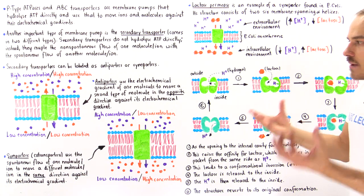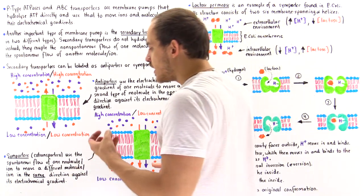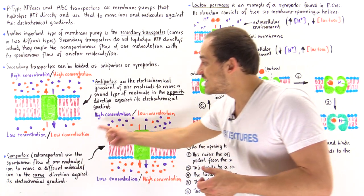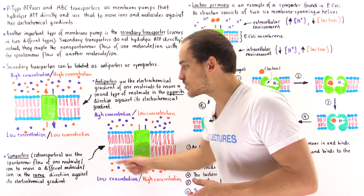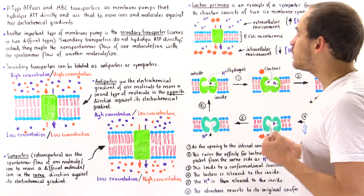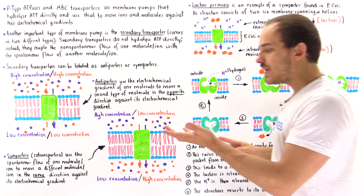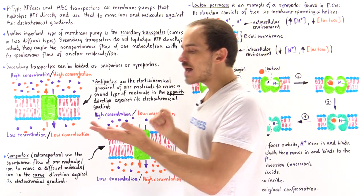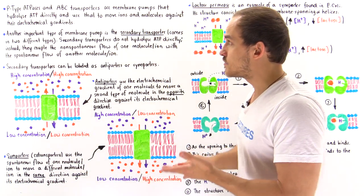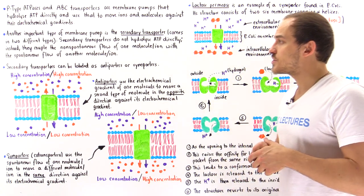To demonstrate a specific example, let's look at a very common type of symporter found in E. coli cell membranes. Both prokaryotic and eukaryotic organisms have these secondary transporters.